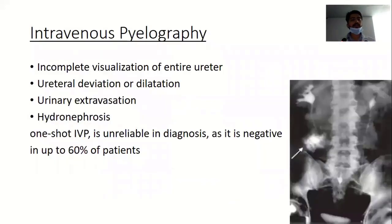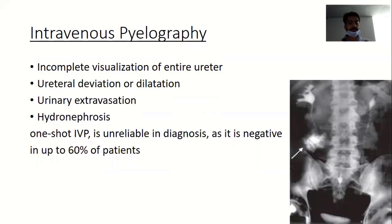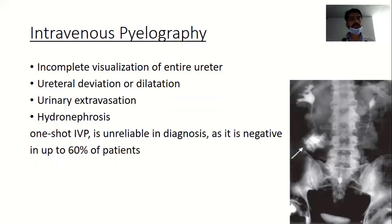Then there is intravenous pyelography. Findings that suggest ureteric injury on IVP include incomplete visualization of the ureter, ureteral deviation or dilatation, urinary extravasation, and hydronephrosis. One-shot IVP is unreliable in diagnosis as it is negative in 60% of patients. Although it is now obsolete and used only in resource-poor countries, its indication is when there is an unstable patient shifted directly to the OR. On the table, one-shot IVP is used for the assessment of the contralateral kidney.